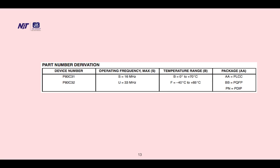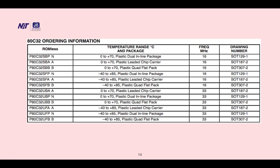Part number derivation includes device number, operating frequency range maximum in seconds, temperature range, and then package. First one is P8031, S equals 16MHz maximum, temperature 0 to 70 degree Celsius, package is PLCC. P80C32, maximum frequency 33MHz, minus 40 to 85 operating temperature range. If it is configuration BB, then it is PQFC. If it is PN, then PDIP, dual-in package.